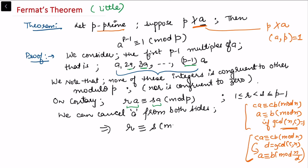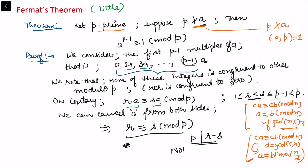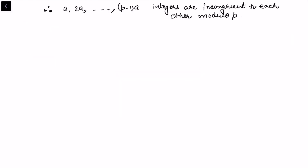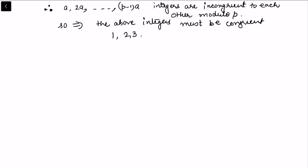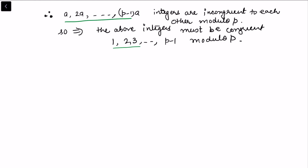But r ≡ s (mod p) implies p divides r minus s. Since r and s are both between 1 and p minus 1, we have |r - s| < p, so p cannot divide r minus s. This is a contradiction, so no two of the integers a, 2a, ..., (p-1)a are congruent to each other modulo p — they are incongruent.